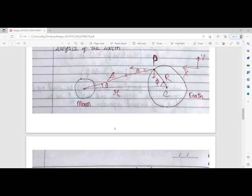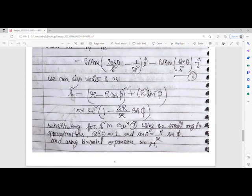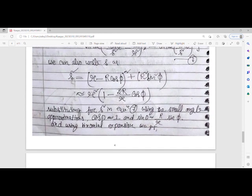Using Pythagorean theorem, we can write s² in terms of r, R, and φ. We get s² = (r - R cos φ)² + R² sin² φ. Neglecting higher terms and using approximation, we get s² ≈ r²(1 - 2R/r cos φ).